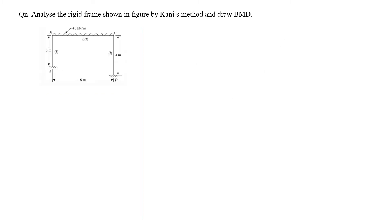We have a problem: analyze a rigid frame using Canny's method. The frame has unsymmetric geometry with columns of different lengths, so we follow the analysis procedure. The first step is fixed end moment calculation.